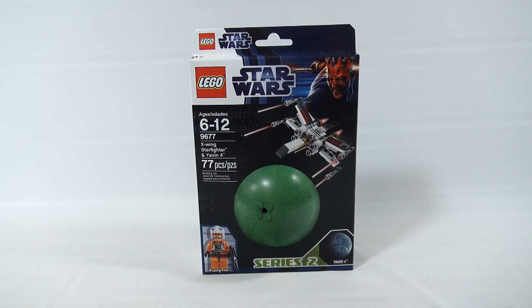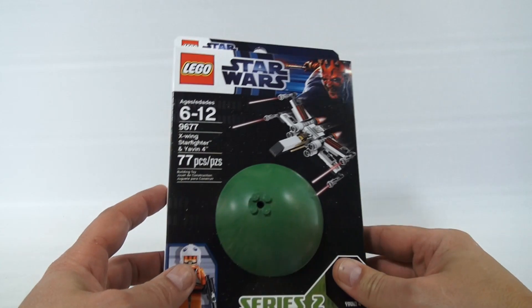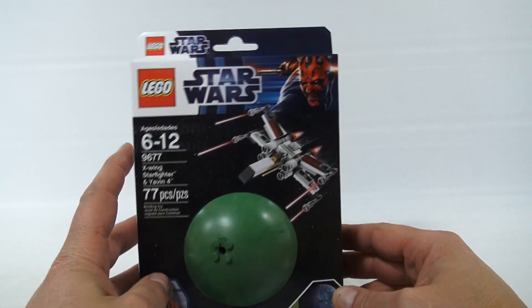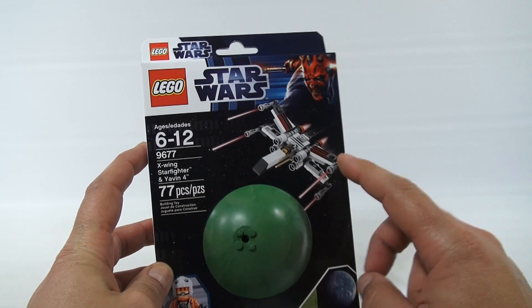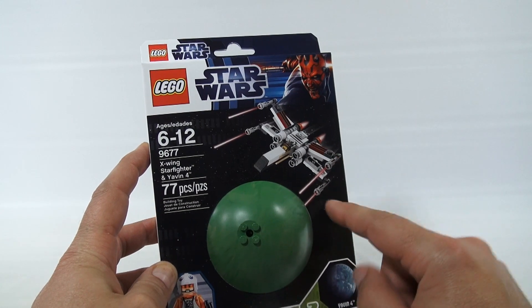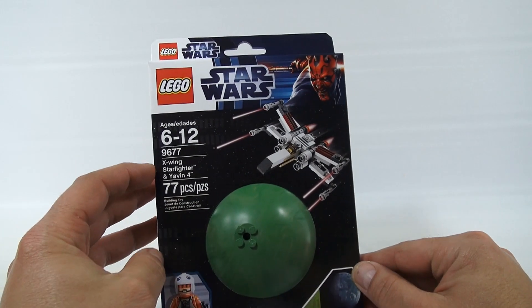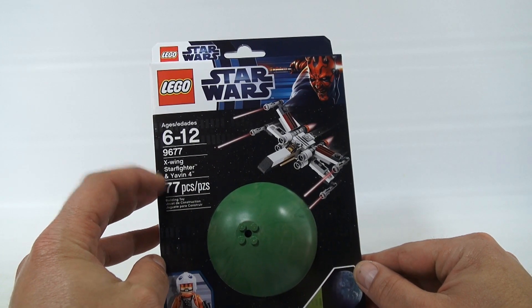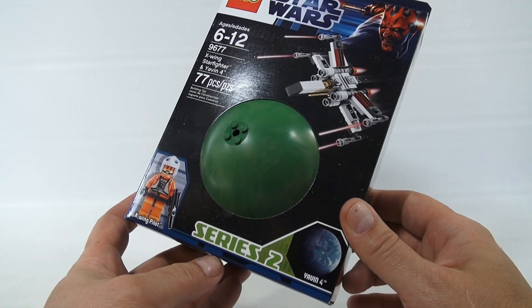Make sure you go to LuckyPennyShop.com and click on the contest banner. We're still deciding how we're going to do the drawing. This is for ages 6 to 12, and by the way, this will be my first Lego set that I actually get to build. It's X-Wing Starfighter and Yavin 4, Series 2.